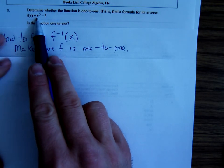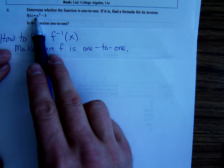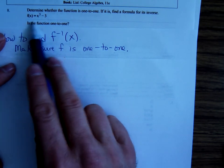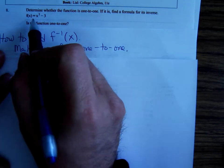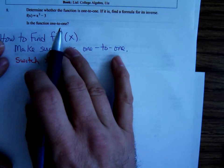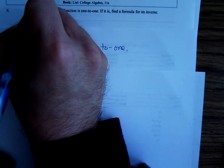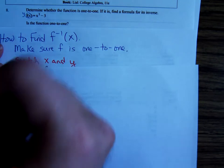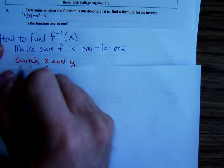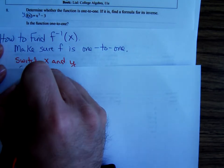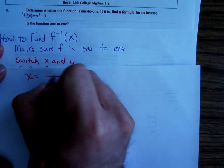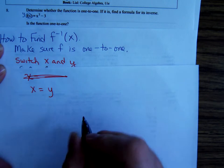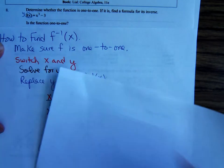If you had an even exponent, like x squared, then if you plug a positive or a negative number, you might get the same y values. But, for right here, we're going to say, yes, it's one-to-one. Keep in mind that f of x is the same thing as y. So, switch x and y. So, we have x equals y to the third minus three.